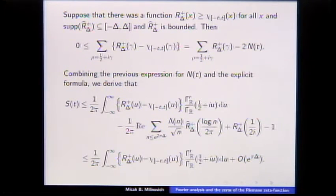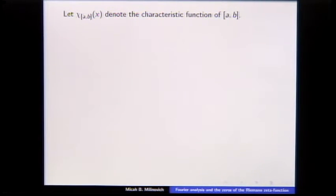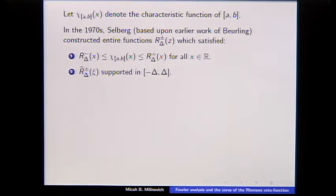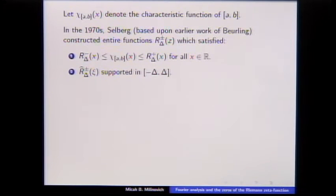That problem turns out to have arisen in the 1970s in proving the large sieve inequality, and it was solved by Selberg. Let chi be the characteristic function of an interval [a, b]. Selberg, based upon earlier work of Beurling, constructed entire functions which are always bigger or always smaller than the characteristic function of an interval, with compactly supported Fourier transform. He showed that if the length of the interval is an integer, then among all entire functions with those two properties, these minimize the L1 distance. These are called Beurling–Selberg functions; Sid Graham calls them 'the amazing functions.'